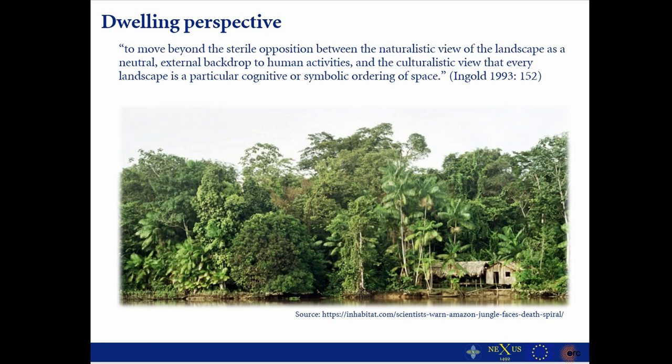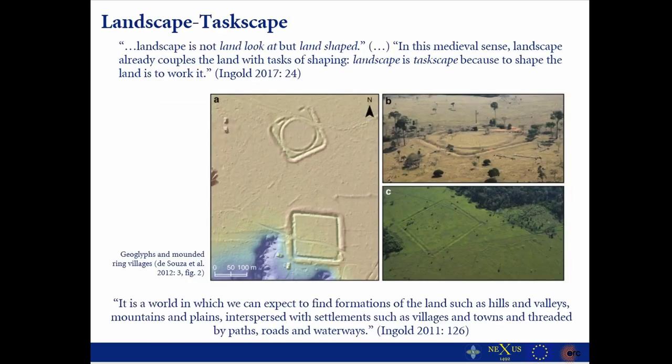The aim was to move beyond the sterile opposition between the naturalistic view of the landscape as a neutral external backdrop to human activities and the culturalistic view that every landscape is a particular cognitive or symbolic ordering of space. Within this Dwelling Perspective, landscape is not just the land that we look at, but actually the land that we shape — or that cultures shape — in their constant actions in the world.